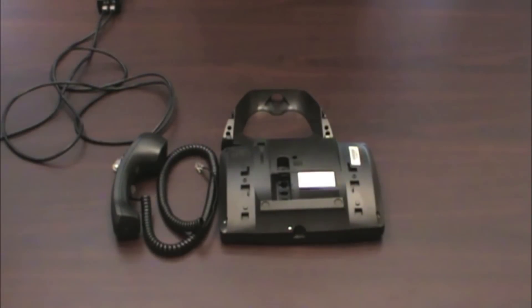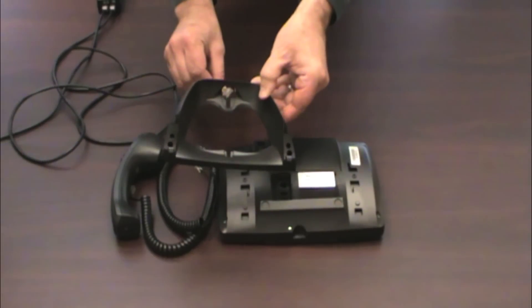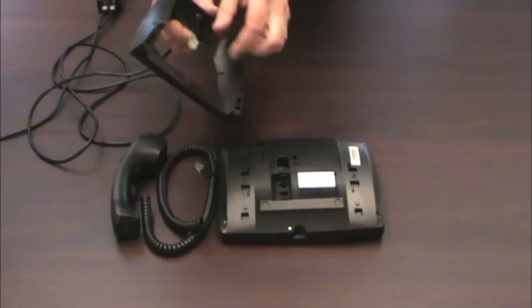Now let's assemble the phone. Take the ethernet cable and thread it through this hole in the base. Connect it to the phone.